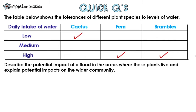The specification says that you need to be able to explain how a change in either abiotic or biotic factors would affect a community when you're given data or context. So that's what this question will focus on.